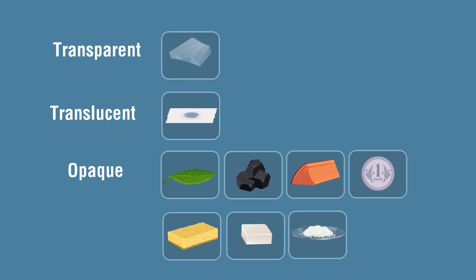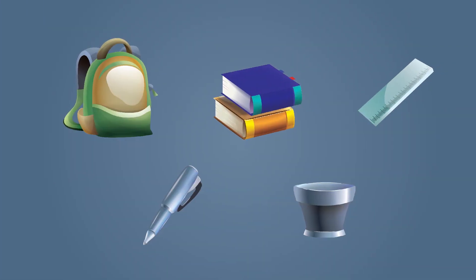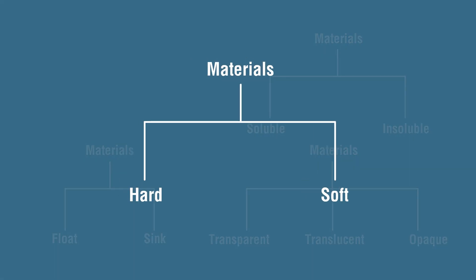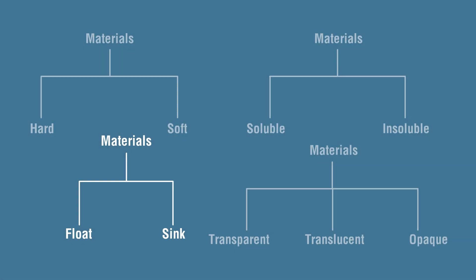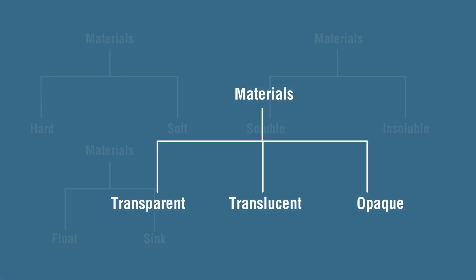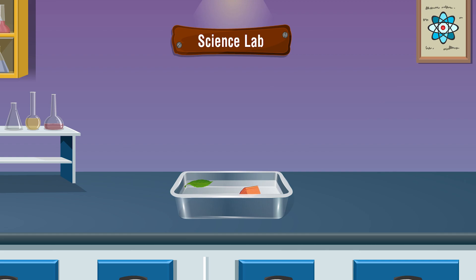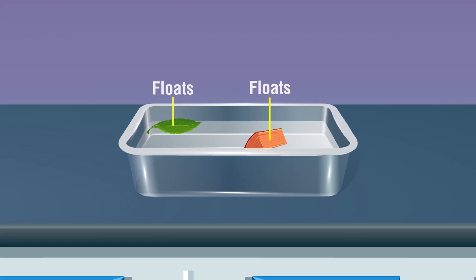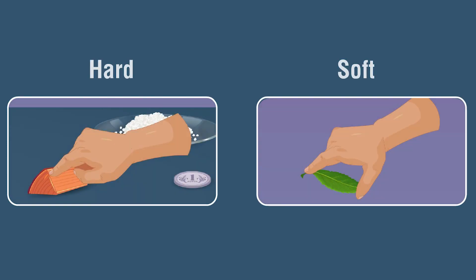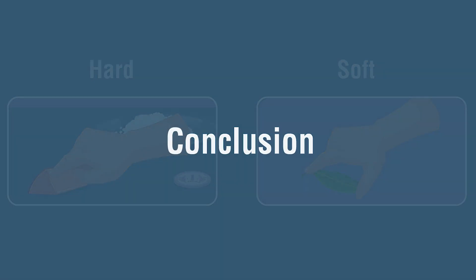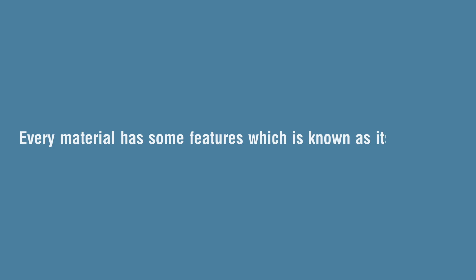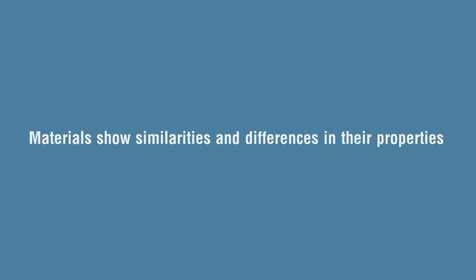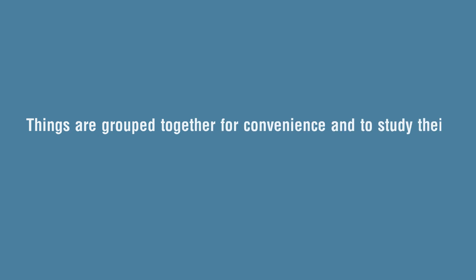You can try out the experiment with other materials from your surroundings and classify them based on their properties. Observation: materials can be classified in different ways depending on their features such as hardness, floats in water, solubility in water, and transparency. Notice that both wood and leaf float in water, but leaf is soft while wood is hard. Conclusion: every material has some features known as its properties. Materials show similarities and differences in their properties. Things are grouped together for convenience and to study their properties.